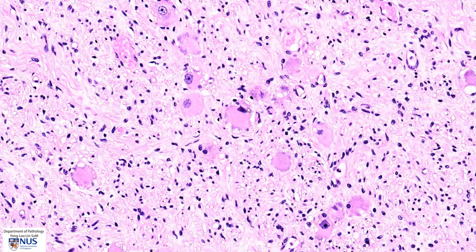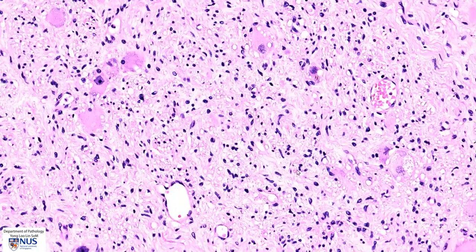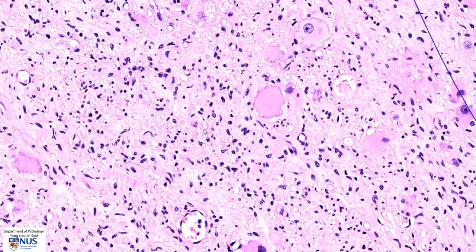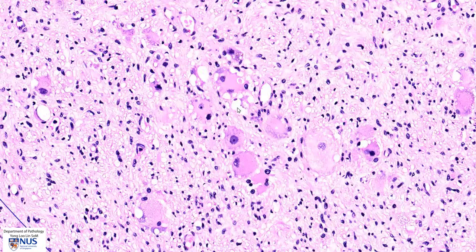Some of these ganglion cells have very dark, smudgy-appearing chromatin. These are the pyknotic nuclei, and these are examples of dysmorphic ganglion cells. Dysmorphic ganglion cells can also be binucleated or multinucleated. Here is an example of a binucleated dysmorphic ganglion cell, and another example here with two nuclei.